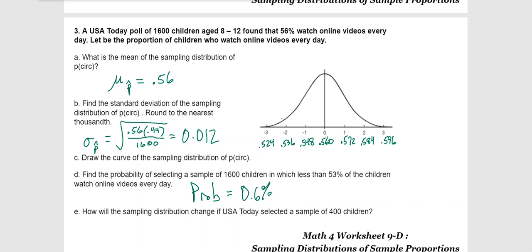Now, how will the sampling distribution change if the selected sample was only 400? Remember that the larger the number is on the bottom, the smaller it gets, which means that our sampling distribution - they're really talking about the graph here - the standard deviation will get bigger. It will get wider and flatter, because when you raise that bottom number, your standard deviation gets smaller and it gets skinnier and taller. This is going to have the exact opposite effect.